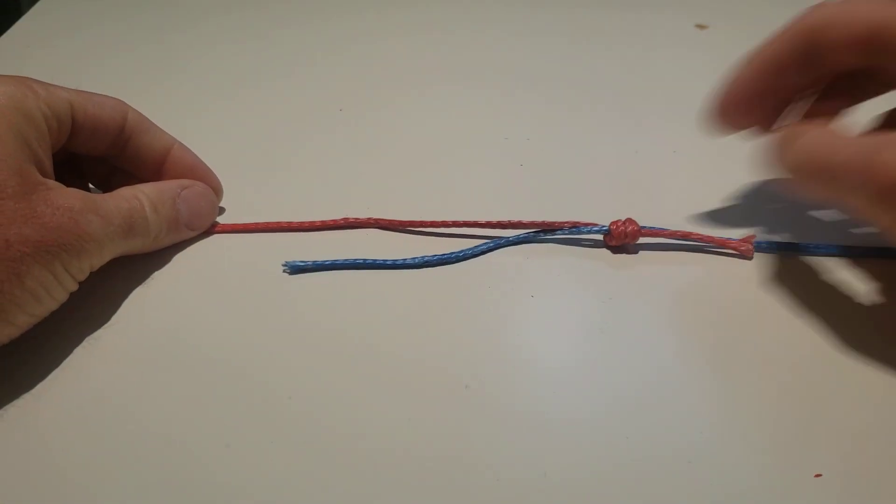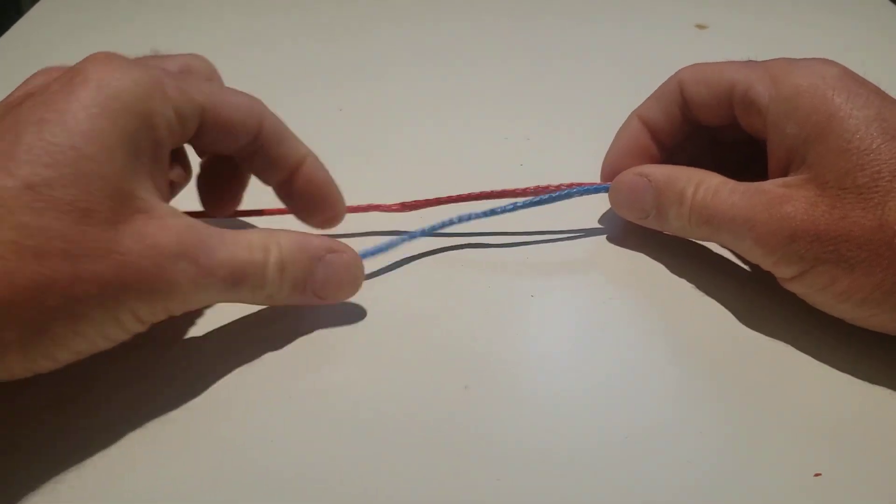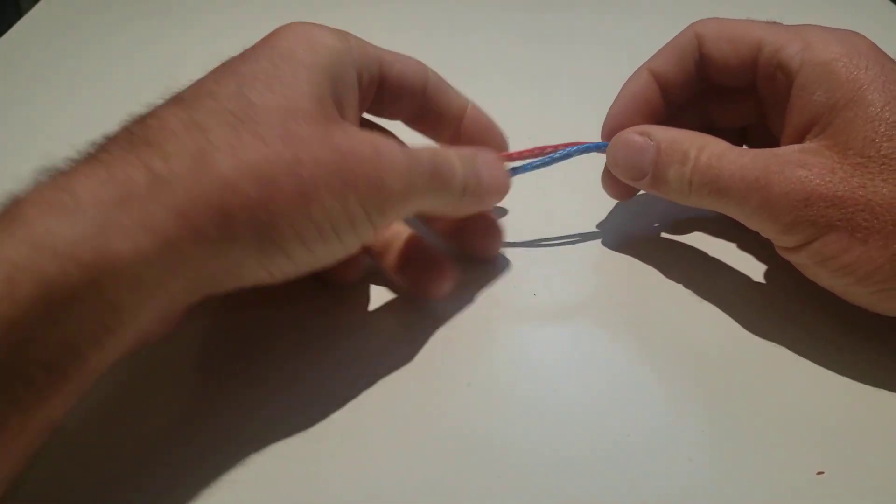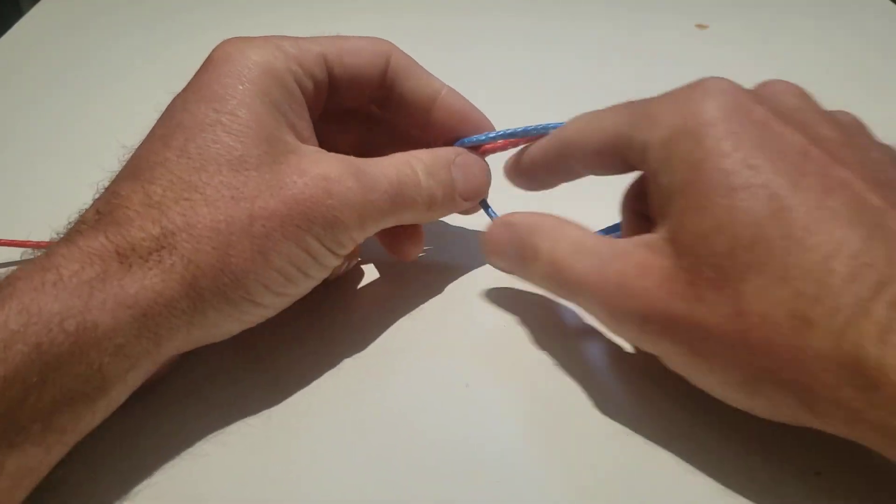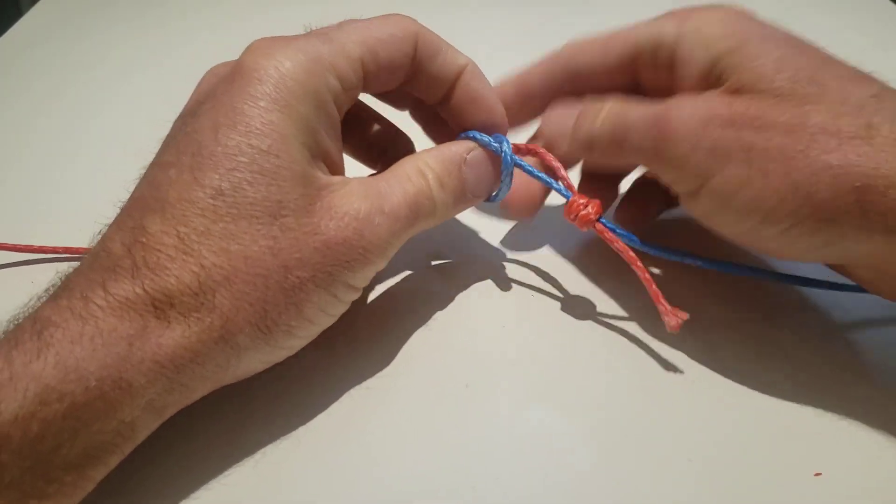Now I'm going to do the same thing to the blue line. Go under, actually let's go over one. There's a second loop.